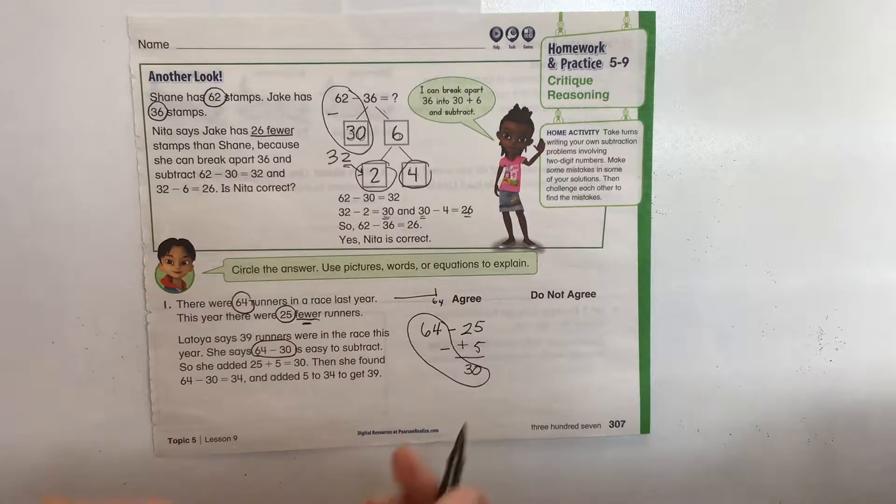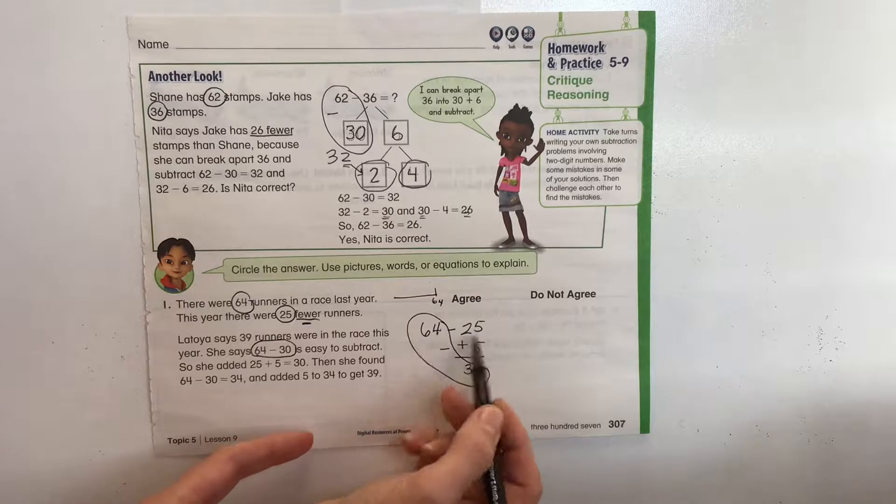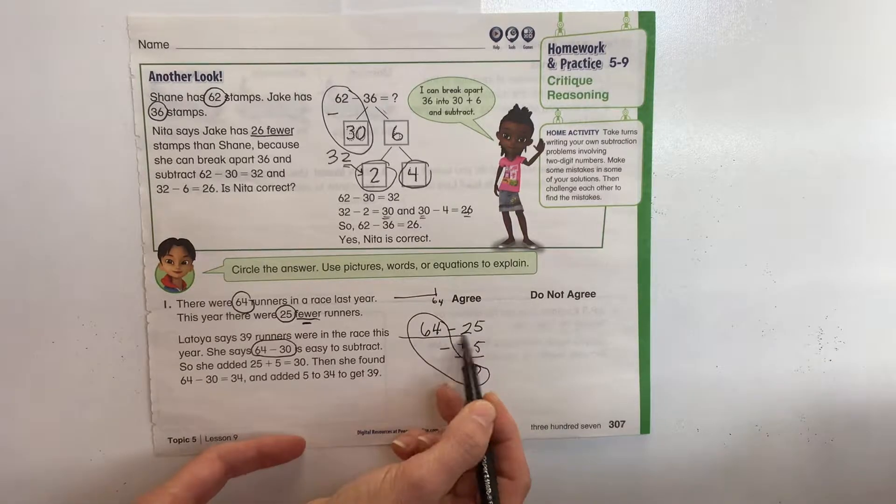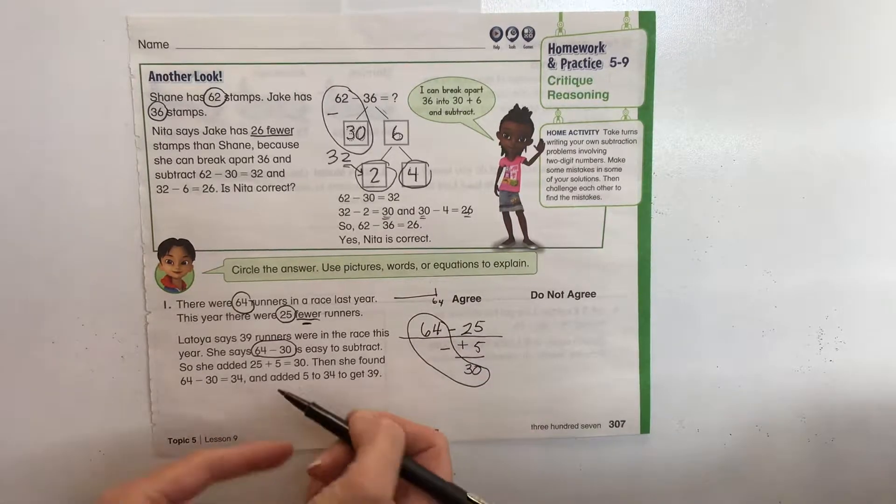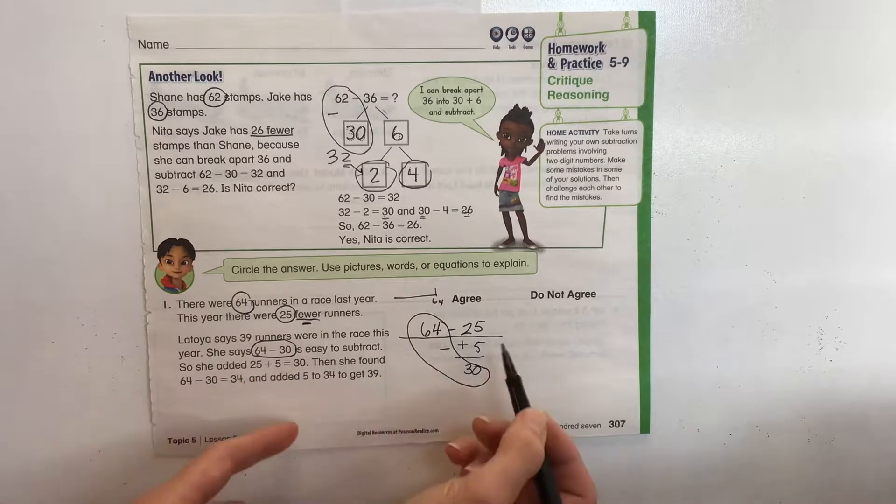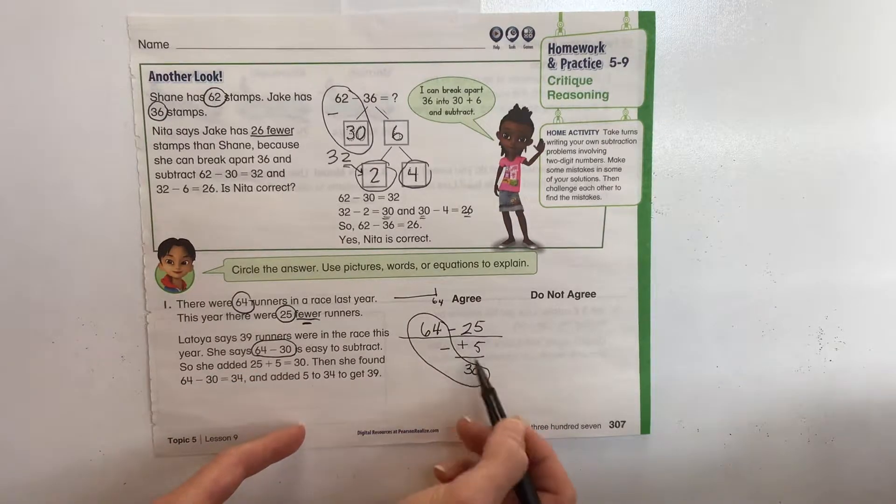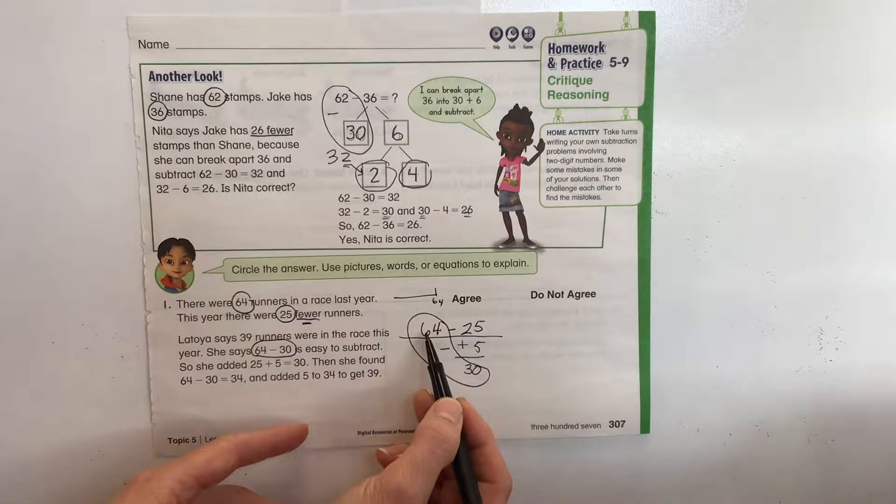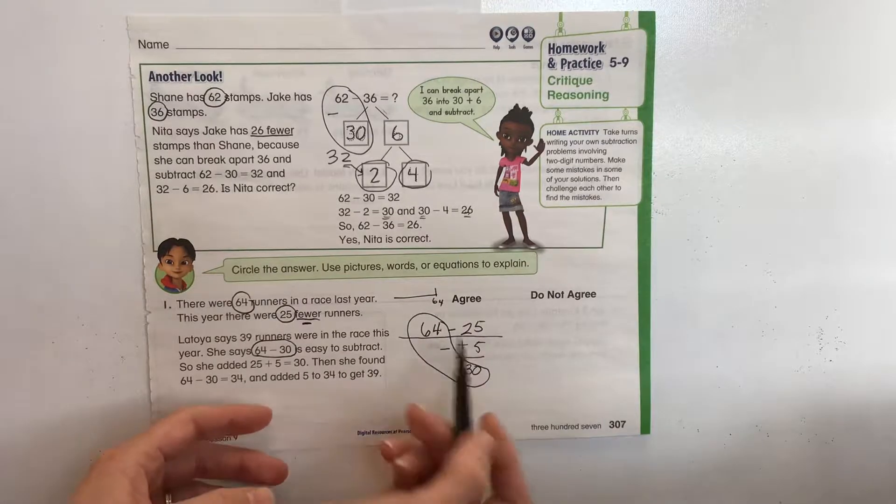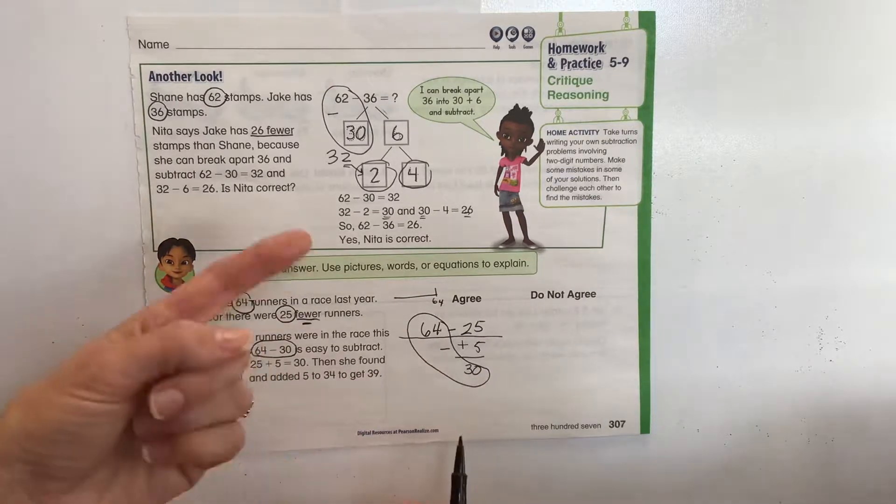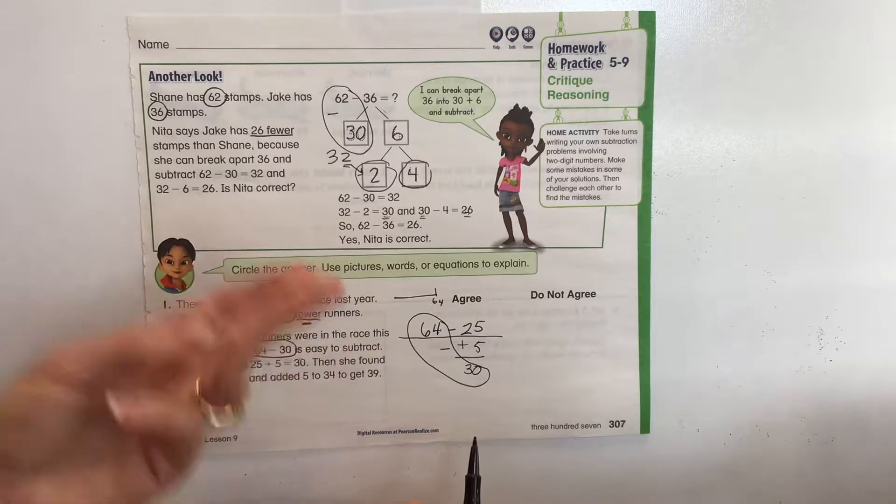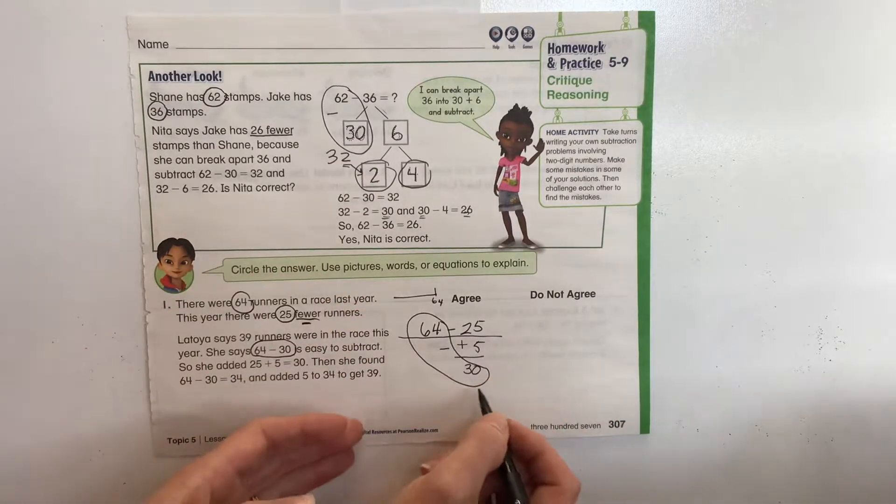So what we're doing over here is we've got 64 minus 25 is our basic equation. Then LaToya says that she added 5 to the 25 to get it to be 30 because it's easier for her to subtract 64 minus 30. Again, students can count backwards, 3 groups of 10: 64, 54, 44, 34 is what that's going to equal.